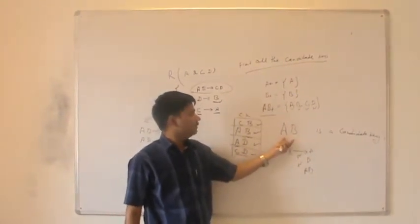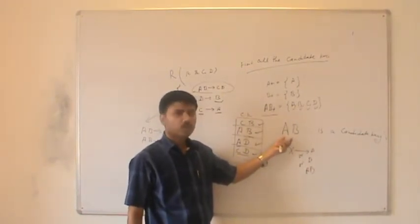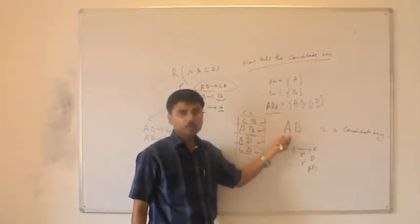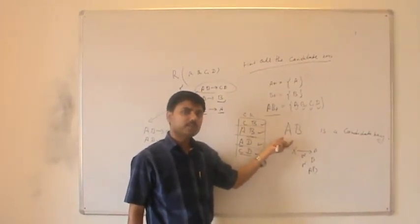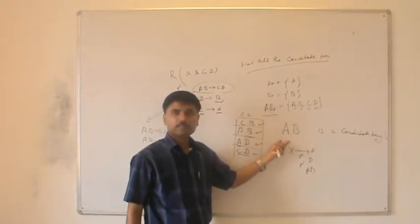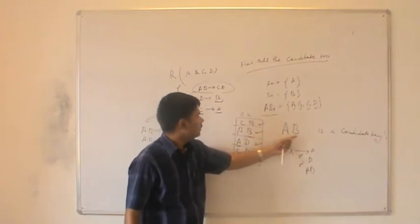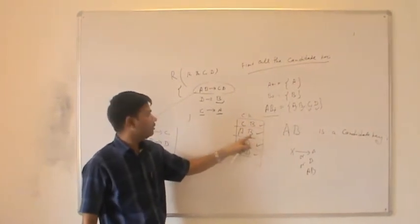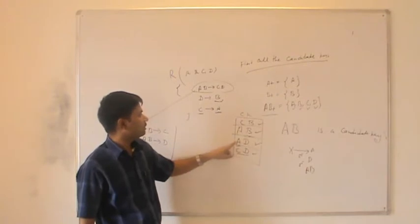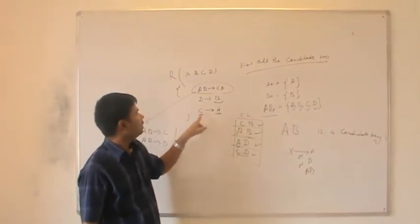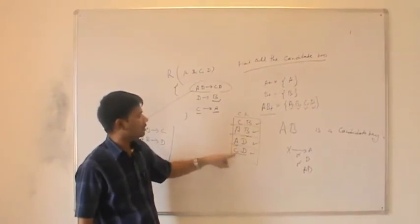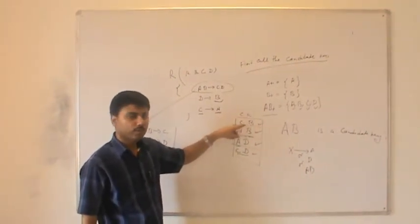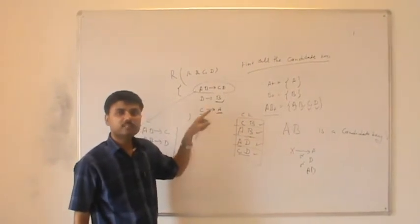To summarize the technique: start with a known candidate key such as AB. Then check whether any attribute determines A, B, or both. If yes, replace that attribute accordingly to obtain new candidate keys. In this example, replacing B with D gives AD, and replacing A with C gives CD and CB. In this relation there are four candidate keys.